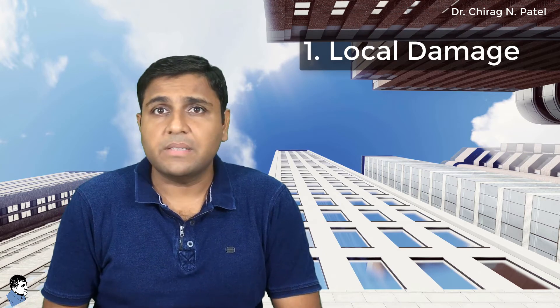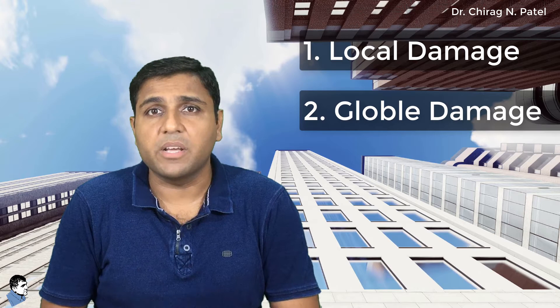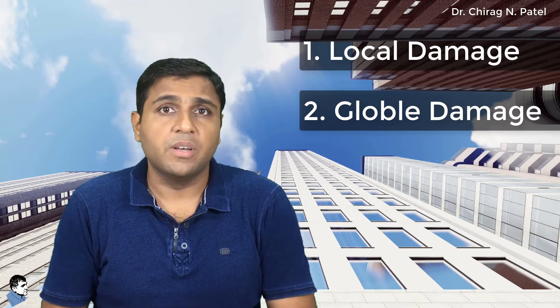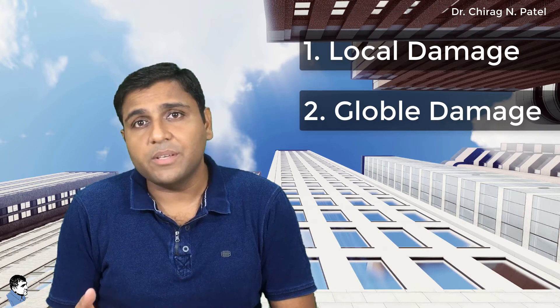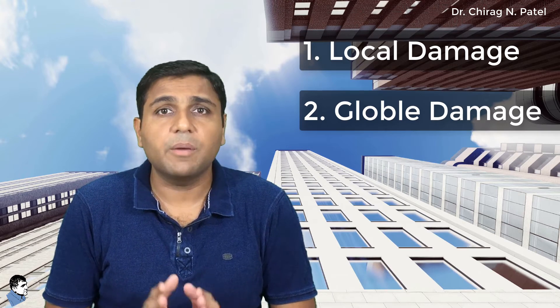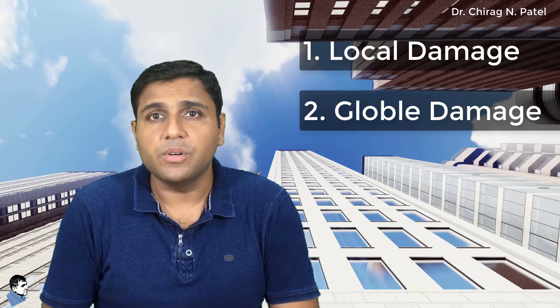Generally two types of pounding damage can occur. One is local damage at the point of impact. Second is global damage resulting from the energy and momentum transfer caused by collision. Local damage is caused by the collision force while global damage depends on the dynamic properties of both buildings at the time of collision.